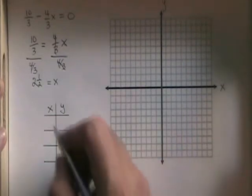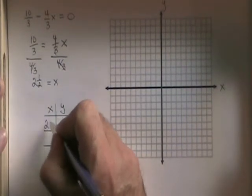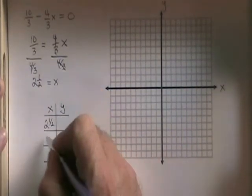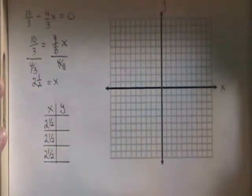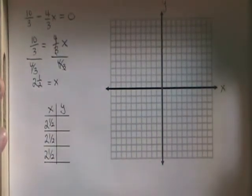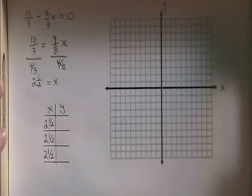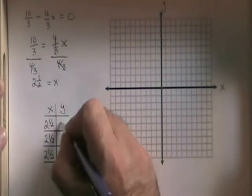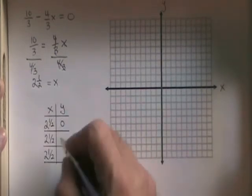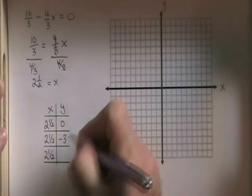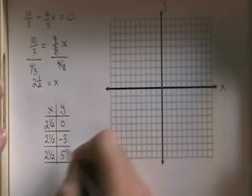If x is equal to 2 and a half, then in the table I show that x is always equal to 2 and a half, no matter what y is equal to. For y, I put any numbers I want, but I make sure 0, which represents an intercept, is one of them. I'm going to choose y equals negative 3 and y equals 5.